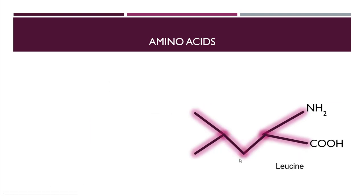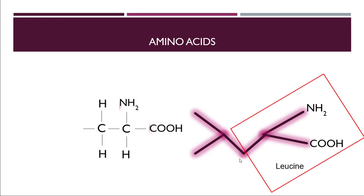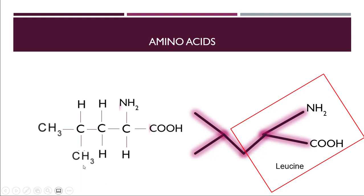Next is leucine. Take the fork and print it. The beta carbon is attached to another carbon, so add a carbon there, and then that carbon is attached to two more carbons. Three bonds are already made on that carbon, so it gets one hydrogen. The two terminal carbons each get three hydrogens — CH3 groups. This is the official structure for leucine.